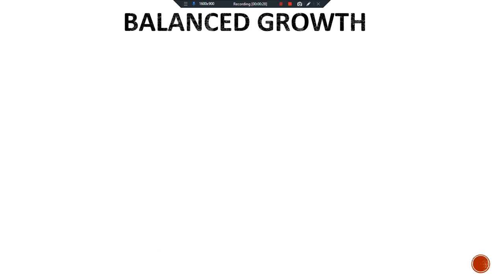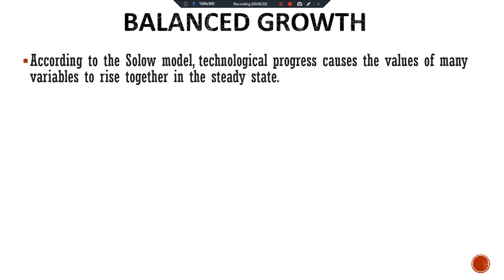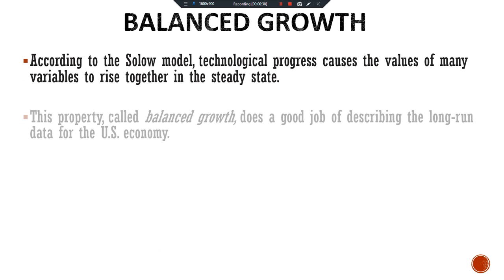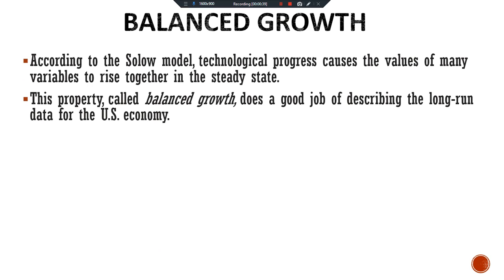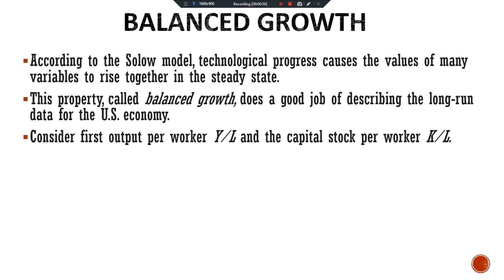Balanced growth. According to the Solow model, technological progress causes the values of many variables to rise together in the steady state. This property called balanced growth does a good job of describing the long run data for the US economy. Consider first output per worker, Y over L, and capital stock per worker, K over L.